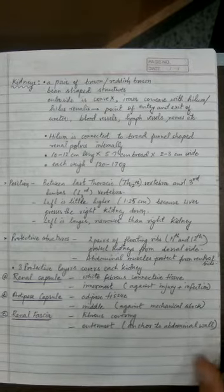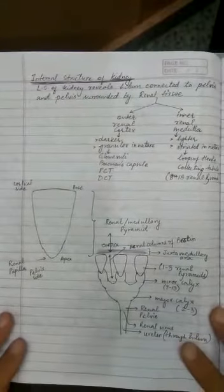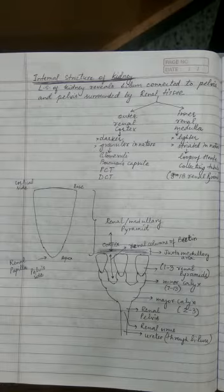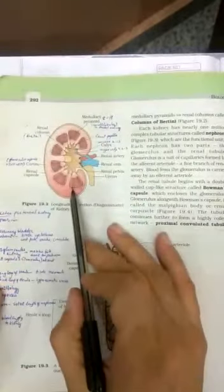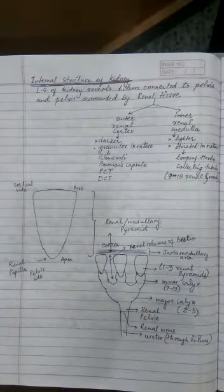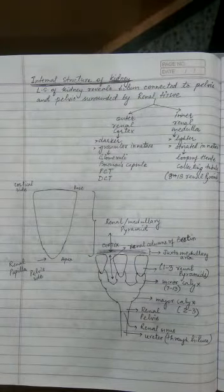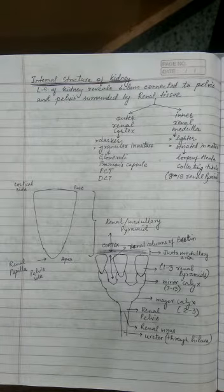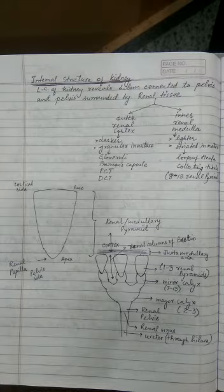We covered the structure of internal parts of the kidney. The LS of the kidney shows two portions in the renal tissue. The outer is darker, appears granular, and is rich in glomeruli, Bowman's capsule, PCT and DCT, and is called the cortex.